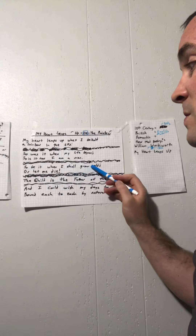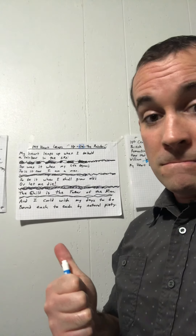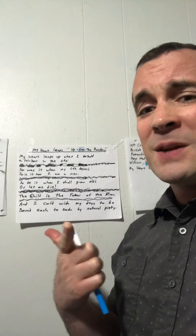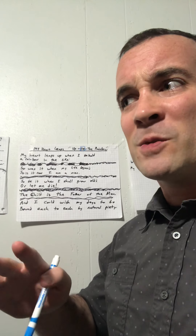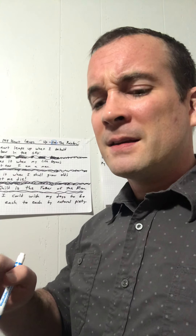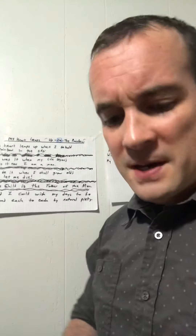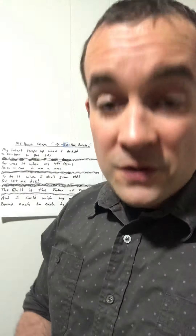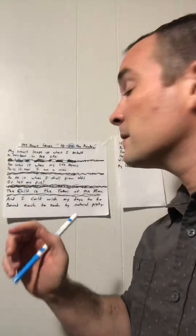Okay, so that was our first reading. What do we notice? It's a poem — it rhymes a little bit, it has some rhythm, but it's not a haiku or a standard sonnet. It's very free-form. Now we'll read it a second time, line by line, and talk about what it means.